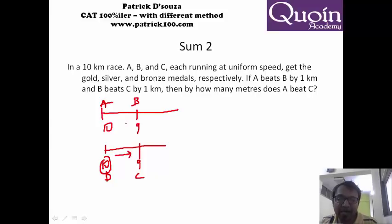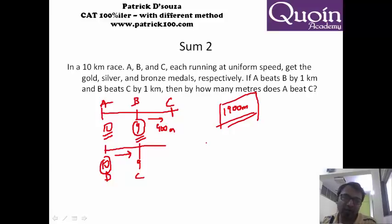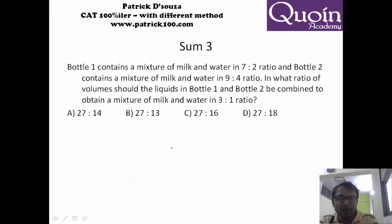So when he runs 10 kilometers, he will beat him by 1 kilometer, 1 tenth. So when B runs 9 kilometers, C will be 900 meters behind, 1 tenth. So when B covers 9 kilometers, C will be 1 tenth behind of B which is 900 meters. Which means when A covers 10 kilometers, C will be 1900 meters behind. So that is the answer. You don't require equations. You need to be comfortable with ratios. That's one important concept. There are a few concepts which are important for CAT. One is ratios, one is averages, which you need to be comfortable with.